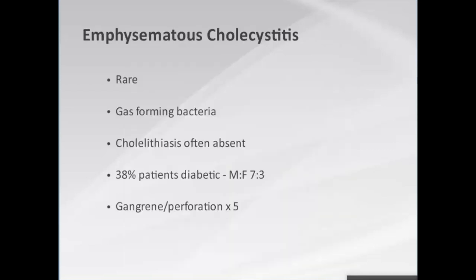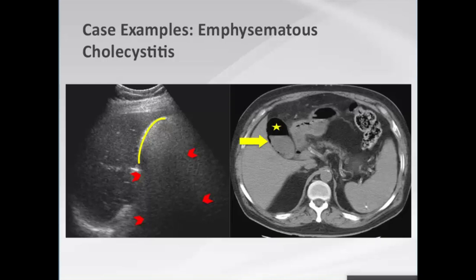Emphysematous cholecystitis is thankfully rare, caused by gas-forming bacteria. Often gallstones are absent; a little over one-third of patients will be diabetic and it is more common in men. It is an important condition because of its high gangrene and perforation rates and therefore high morbidity and potentially high mortality. We see a very echogenic gallbladder wall with reverberation artifact — so-called dirty shadowing — very typical of air in the gallbladder wall.